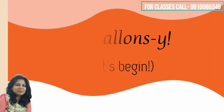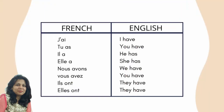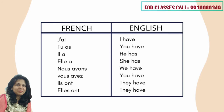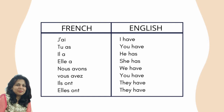J'ai means I have. Tu as — you have. Il a — he has. Elle — she has. Nous avons — we have. Vous avez — you all have. Ils ont — they have. Elles ont — they have.